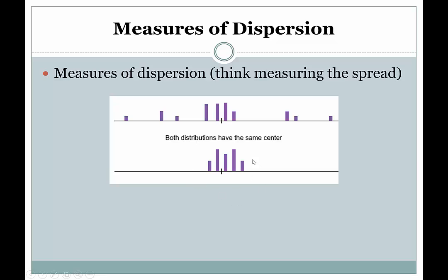Just looking at this simple diagram, both of these distributions have the same center, but they have very different dispersions. The top one is far more spread out, the bottom one is far more clustered, so the spread in the data sets is very different, even though the center is the same.